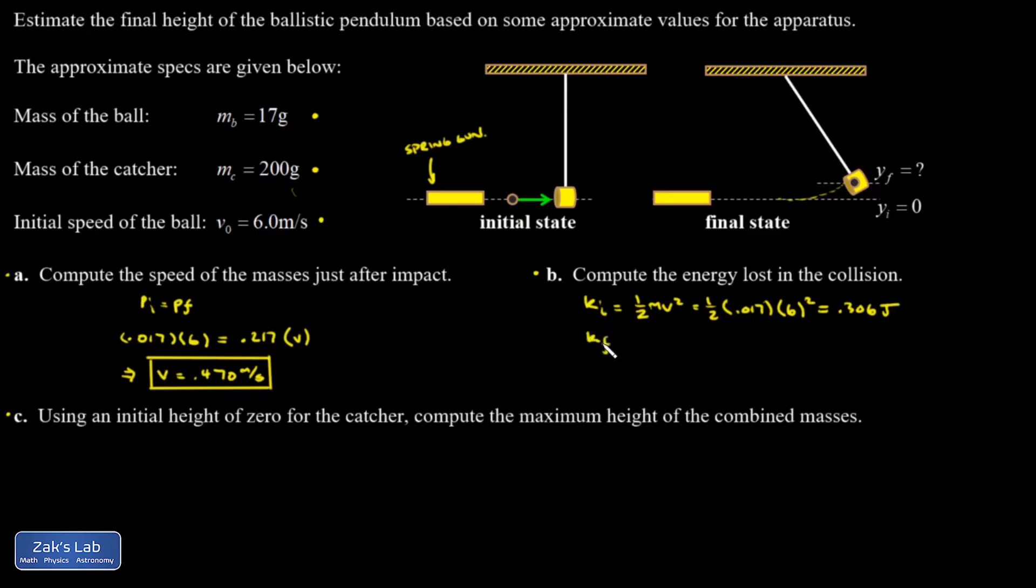K final: After the collision, the masses are combined. That's one-half times the total mass, 0.217 kilograms, times the final speed 0.47 meters per second squared. This gives 0.024 joules.